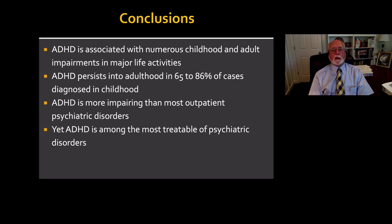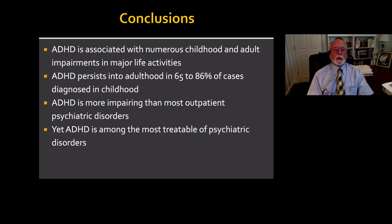People with ADHD can outgrow the DSM criteria, even though they may not be outgrowing their symptoms relative to other people of the same age and sex. And we can hazard a guess that about 65% to over 86% of children diagnosed with ADHD will have some degree of ADHD that impairs them upon reaching adulthood.